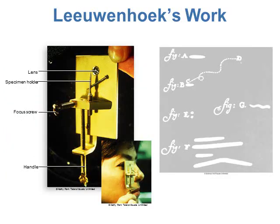This is a picture of his single-lens microscope on the left-hand side. He had just one lens that he looked through, and then his specimen holder kind of looked like a nail. He placed the specimen on top of that, and then there were focus screws so he could adjust where the specimen was located. The image at the bottom shows a person actually using his first microscope. On the right side we have drawings from his notebook — figure A looks like a rod-shaped or bacillus bacteria, and we also have squiggly bacteria and other shapes.